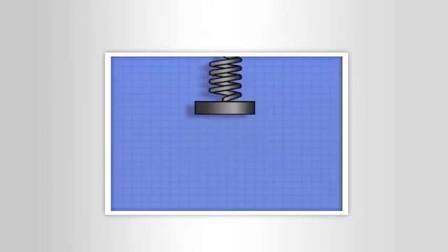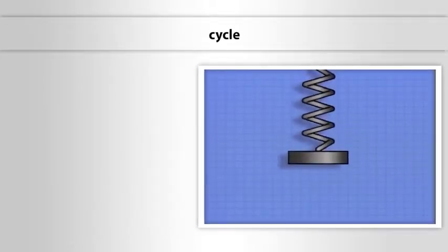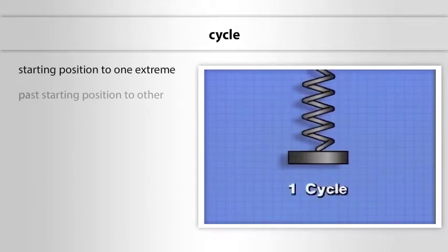One term that's used in describing vibration is cycle. When the block moves from the starting position to one extreme, then past its starting position to the other extreme, and finally back to its original position, it is said to have completed one cycle.